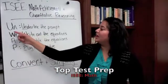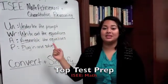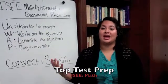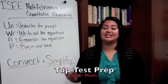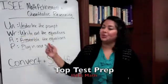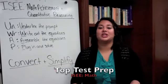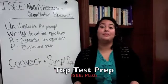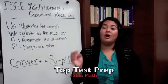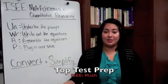It stands for — the UN is to underline the prompt. You have to know what you're looking for and what the question is asking you to find. Second is write out the equations. If the question asks you about mean, for example, you might want to write out: mean equals all the numbers added together divided by the number of numbers.